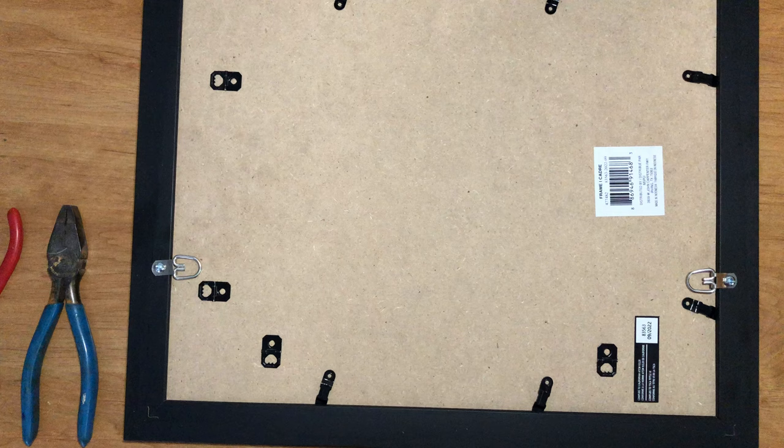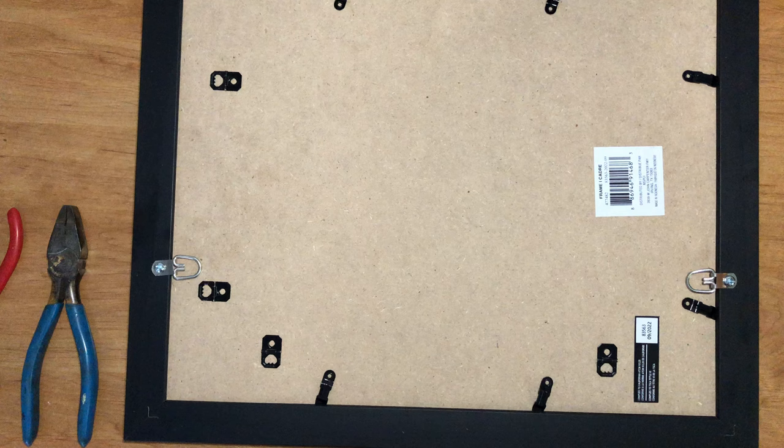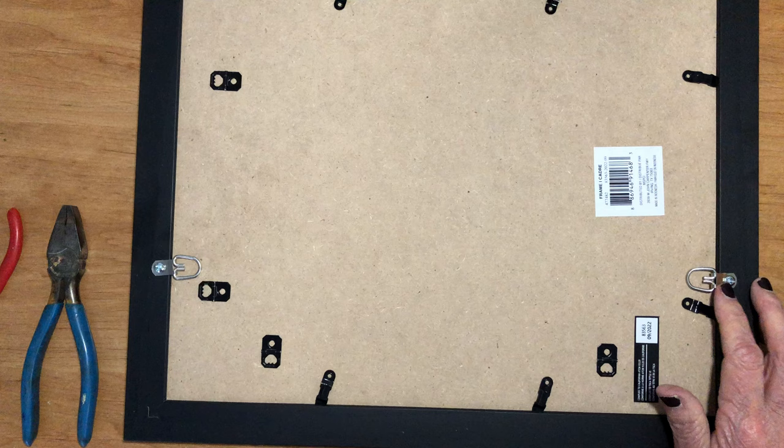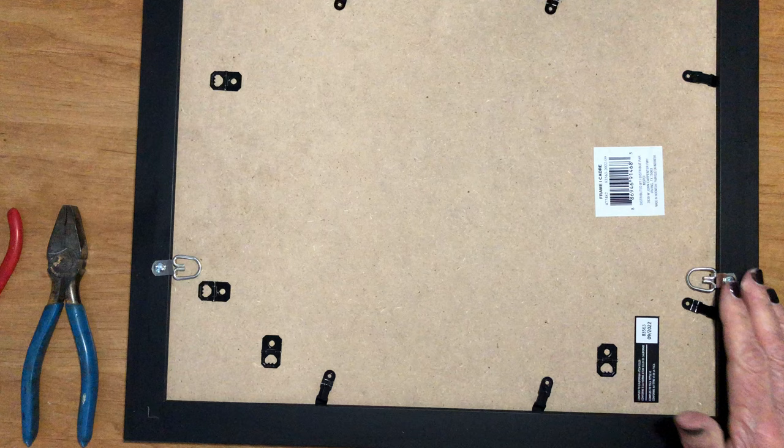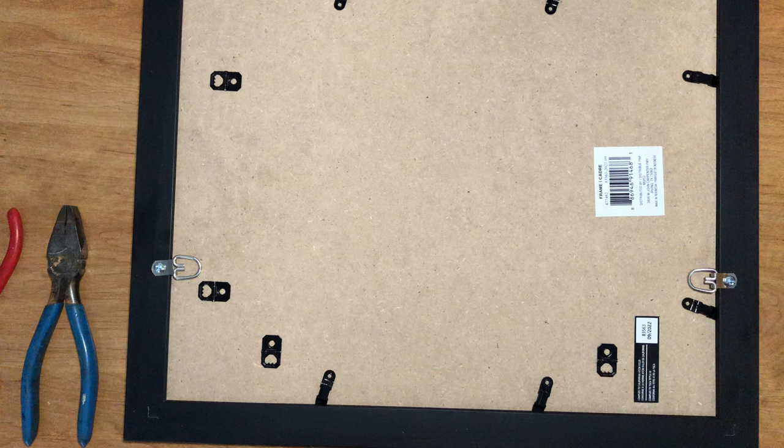What I do is I attach wire to make it easy for hanging. This is an easy method you could do. I buy my d-rings which come with the screws from Amazon. I'll put the link in the description below. You need a wood frame, that is all I purchase.